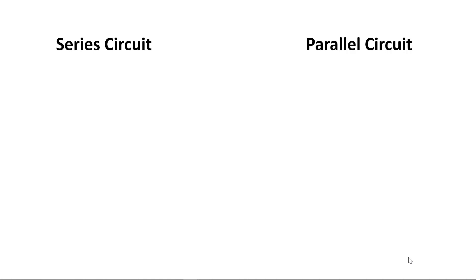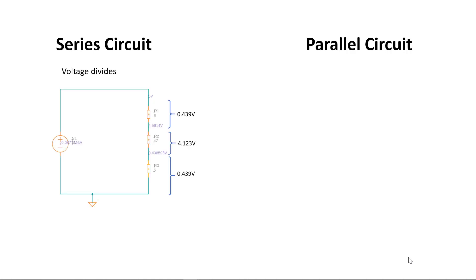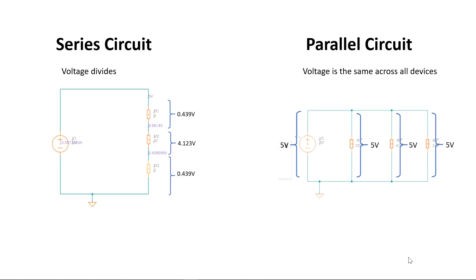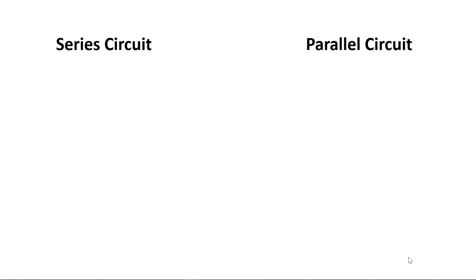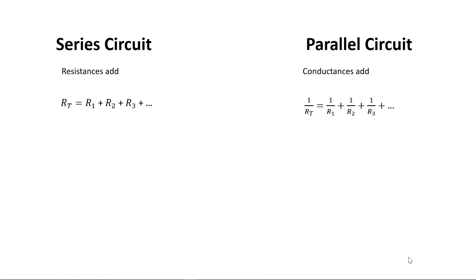In a series circuit, voltage divides amongst all the devices. In a parallel circuit, the voltage is the same across all devices. In a series circuit, total voltage equals the sum of all the voltage drops: VT equals V1 plus V2 plus V3 and so on. In a parallel circuit, VT equals V1 equals V2 equals V3 and so on. In a series circuit, resistances add: RT equals R1 plus R2 plus R3 and so on. In a parallel circuit, 1 over RT equals 1 over R1 plus 1 over R2 plus 1 over R3 and so on.